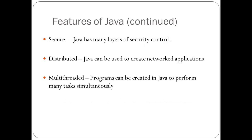Java is multi-threaded, meaning programs can be created in Java to perform many tasks simultaneously. For example, when working in MS Word, you may be typing while also having given a print command sending a page to the printer queue, and also saving the document — but none of this stops the typing process. Different processes are allocated to perform these tasks simultaneously, and such an application is said to be multi-threaded. Java can create programs which are multi-threaded.